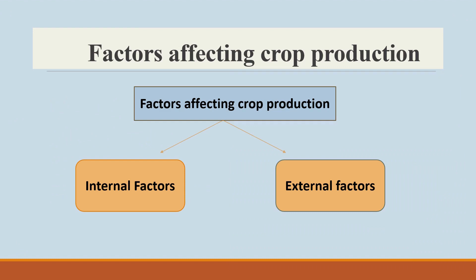Now let us discuss what are the factors influencing crop production. The major factors are internal factors and external factors. The internal factors are based on genetic factors, and external factors are based on climatic and edaphic factors. Internal factors influence the genetic makeup — the increase in crop yields and other desirable characters are related to the genetic makeup of the plants.